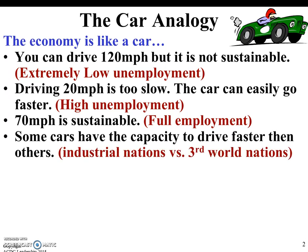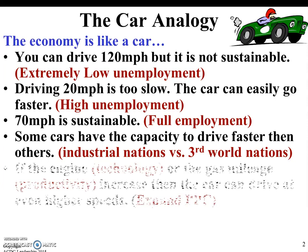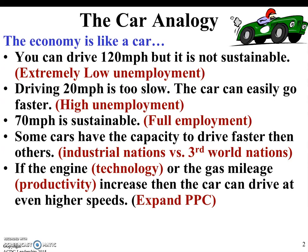Some cars have the capacity to drive faster than others — industrialized nations like the United States versus third world nations. If the engine technology, gas mileage, and productivity increase, then the car can drive at even higher speeds. Think about the production possibilities curve. Any time there was a point of production along the curve, it was because we only had a certain amount of resources. We couldn't push that curve outward unless we got new resources or new technology. If we increase technology and productivity, we can expand and push that curve outward — grow the economy.